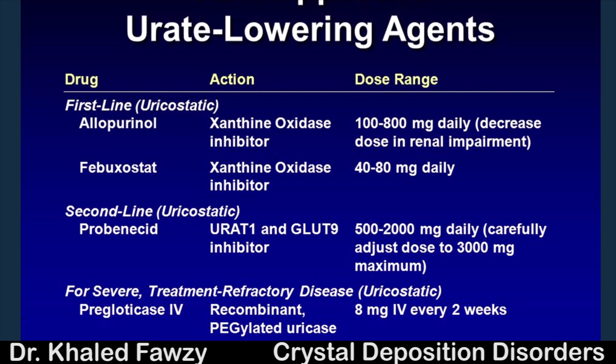A newer drug, not yet available in Egypt, is a recombinant uricase enzyme that converts uric acid into allantoin, thereby decreasing serum uric acid.